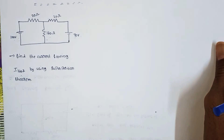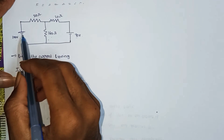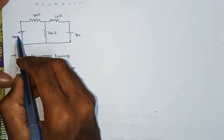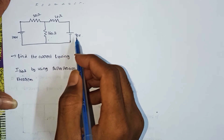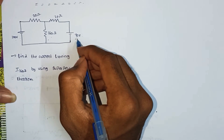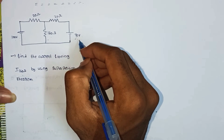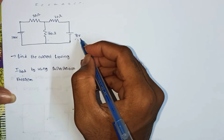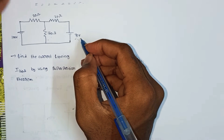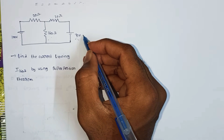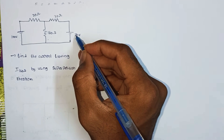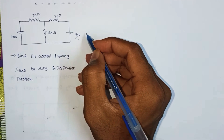By using superposition theorem we can find the current through the 160 ohm resistance. First, in superposition we activate only one source and deactivate another source. In case of a voltage source, we replace it as a short circuit. In case of a current source, we replace it as an open circuit.